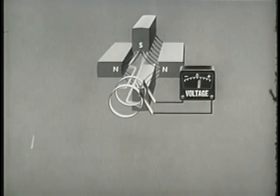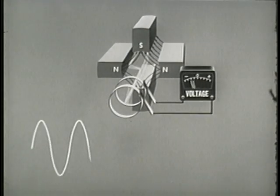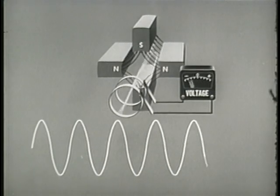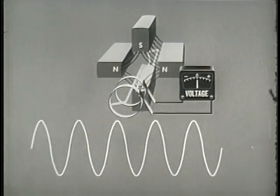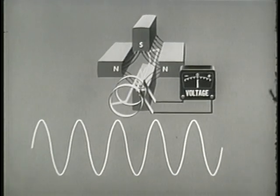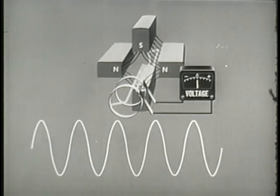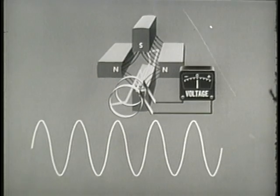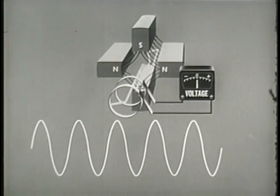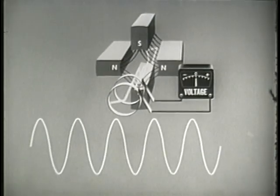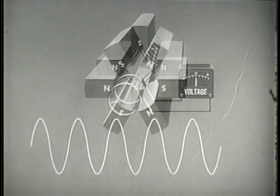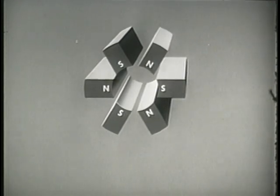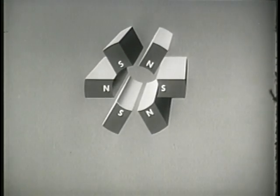Frequency can be changed in the AC generator by the introduction of additional magnetic fields. The relationship between mechanical and electrical degrees depends on the number of poles in the generator field. In a four-pole field, 360 mechanical degrees equals 720 electrical degrees, a ratio of one to two. In a six-pole field, the ratio is one to three, and so forth.